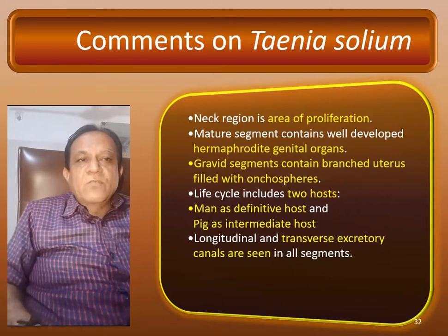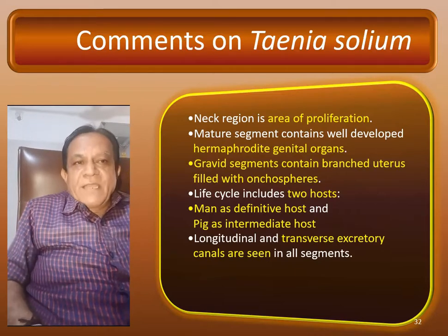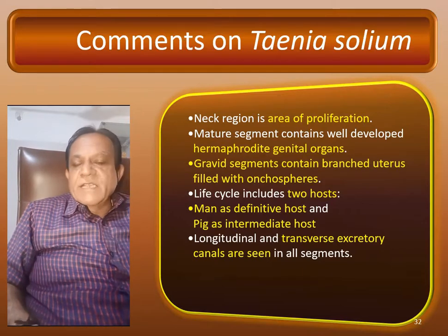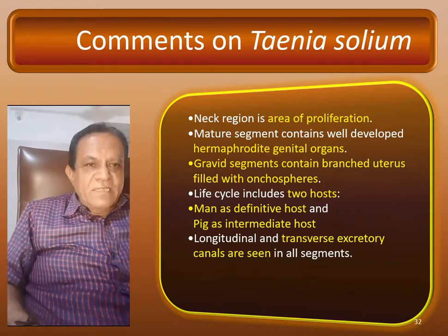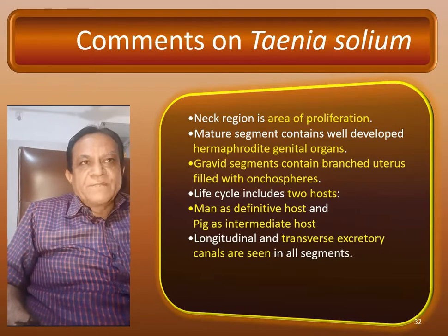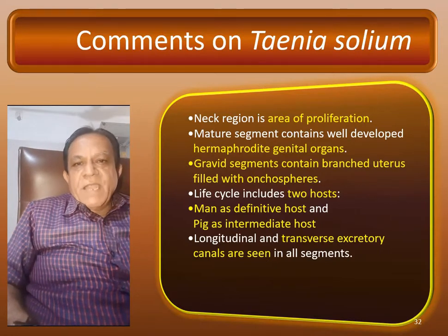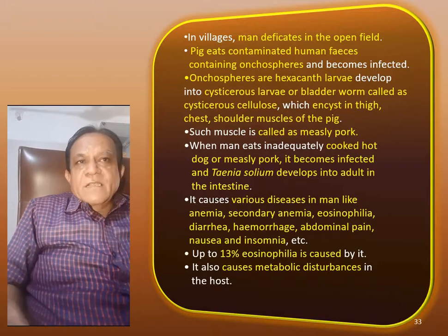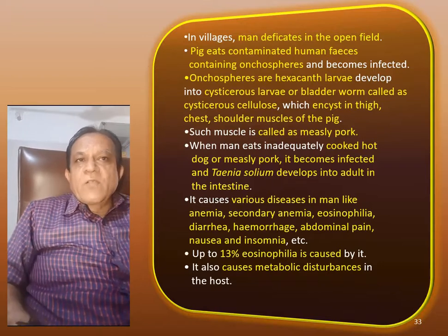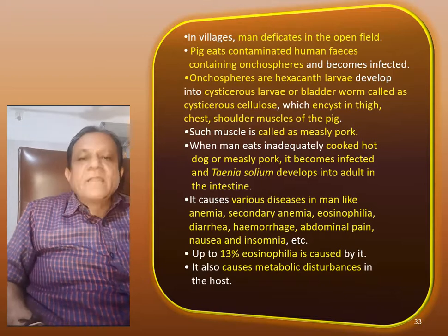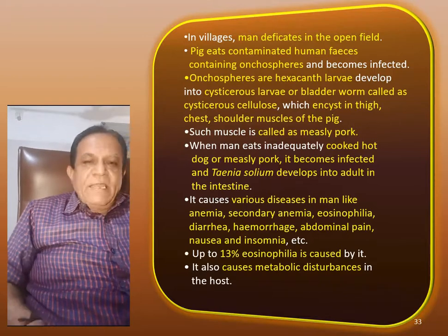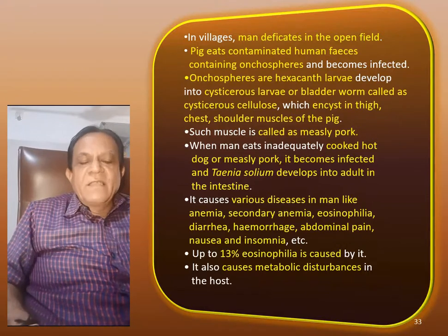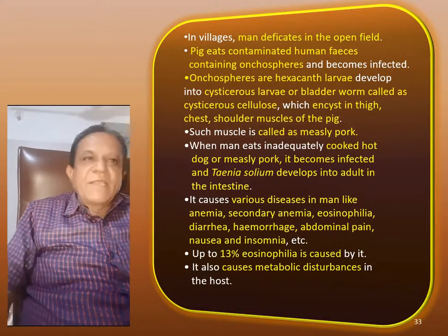Life cycle includes two hosts: man as definitive host and pig as intermediate host. Longitudinal and transverse excretory canals are seen in all segments. Man defecates in open fields; pig eats contaminated human faeces containing oncospheres and becomes infected. The encysted larvae is a cysticercus in the pig's muscle.